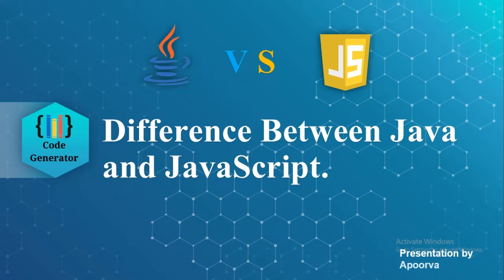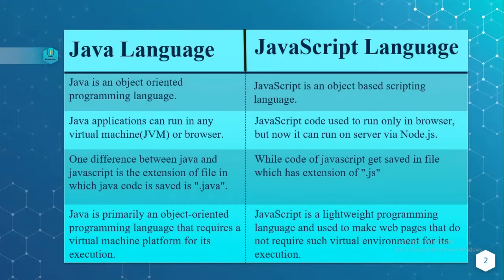Now let me come to Java. Java is an object-oriented programming language and has a virtual machine platform that allows you to create compiled programs that can run on nearly every platform. Java promises us a write once, run anywhere format. Now let's come to the differences.